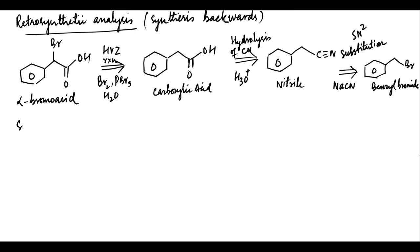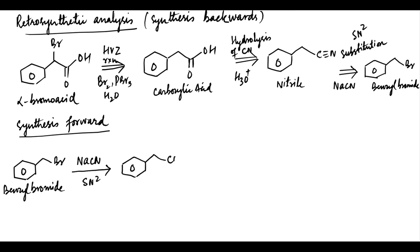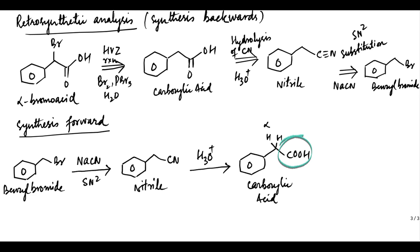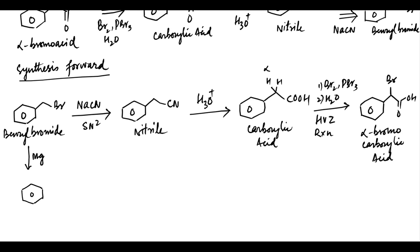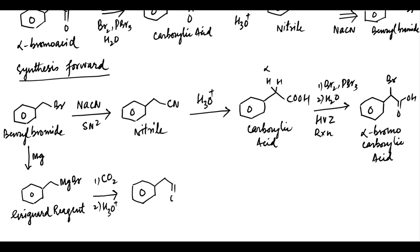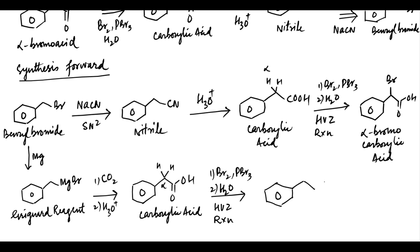Now let's draw the forward synthesis scheme. Benzyl bromide is treated with sodium cyanide, giving an SN2 reaction that results in formation of a nitrile. Upon treatment with aqueous acid, the nitrile is hydrolyzed to give a carboxylic acid with alpha-hydrogens. Bromination at the alpha position is then achieved by treating with Br2 in the presence of catalytic PBr3, followed by hydrolysis — the HVZ reaction. Alternatively, benzyl bromide can be converted to a Grignard reagent, benzyl magnesium bromide. This Grignard reagent, upon treatment with carbon dioxide followed by acid workup, gives the carboxylic acid, which is susceptible to HVZ reaction to give the desired alpha-bromo carboxylic acid.